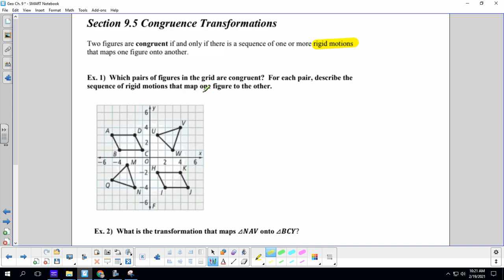For each pair, describe the sequence of rigid motions that map one figure to the other. I know that these A, B, C, D does not go with M and Q. So, I know the triangles are going to go together, and I know the parallelograms are going to go together. Let's get a pen. Which pairs of figures in the grid are congruent? So, let's go, quadrilateral A, B, C, D is going to be congruent to quadrilateral H, I, J, K. Make sure that you guys, when you answer questions, especially on your test, you look at what the question it's asking and give it the answer what it wants.